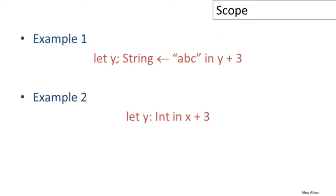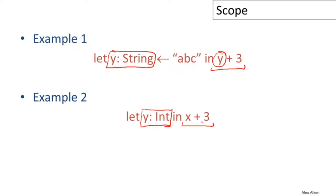Here are a couple of examples from Cool. In the first, a declaration of Y as a string is matched with a use of Y, and you'll get an error because you're trying to add a string and a number. In the second example, there's a declaration of Y with no use in the body of the let — that's fine. But there's a use of X with no matching definition, which results in an undefined variable error.